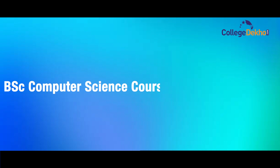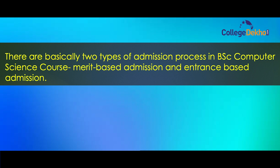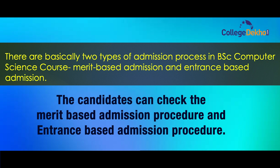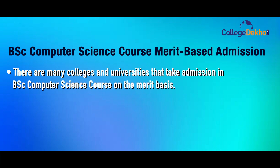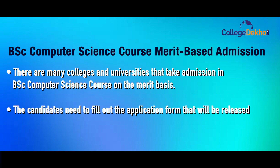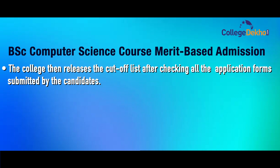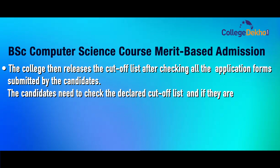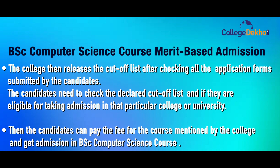There are basically two types of admission process in B.Sc Computer Science: merit-based admission and entrance-based admission. For merit-based admission, many colleges and universities take admission on merit basis. Candidates need to fill out the application form released by universities during May and June, though it might be delayed due to COVID. The college releases a cutoff list, and if eligible, the candidate can pay the course fee and get admission.